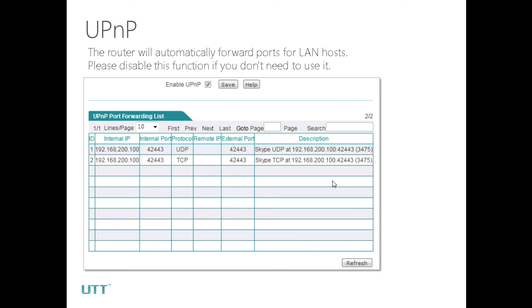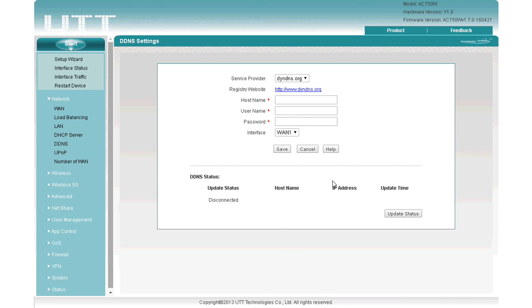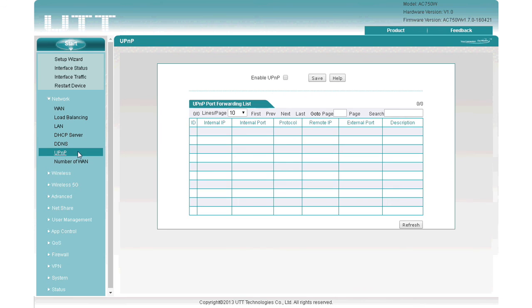Next is UPnP. Click UPnP. When UPnP is enabled, the router will automatically forward ports for LAN hosts. It is often used when you have a server host in your LAN, such as a PC acting as a web server, an Xbox, an IP phone, etc. If it is not needed, please disable this function to decrease the load on the router.